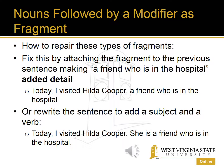Or, we could rewrite the sentence to add a subject and a verb: 'Today, I visited Hilda Cooper. She is a friend who is in the hospital.' Either one is a perfectly acceptable way to fix the sentence. But keep in mind that we want to maintain sentence variety in a paragraph. Too many subject-verb-object sentences in a row causes a choppy essay, so we want to mix up complex sentences with simple sentences and compound sentences.